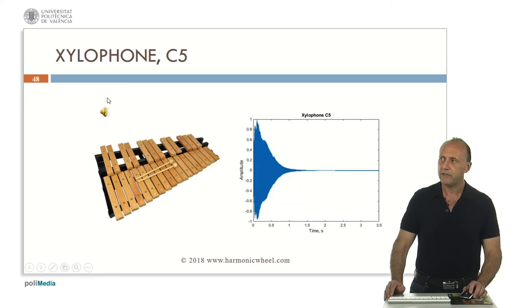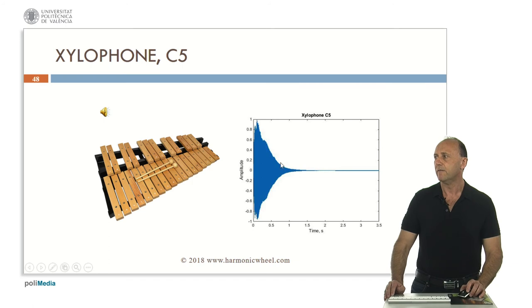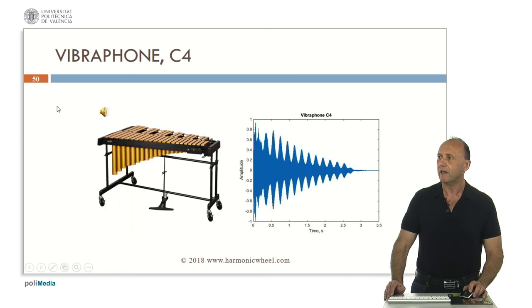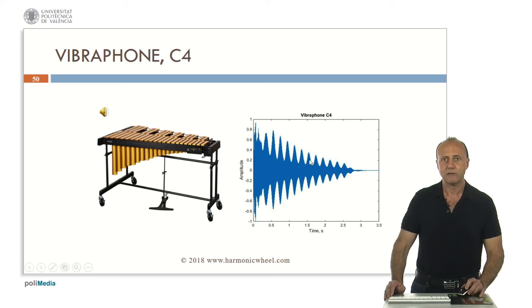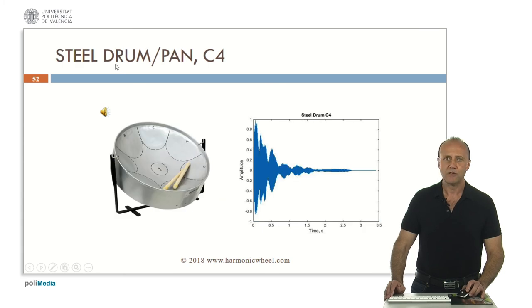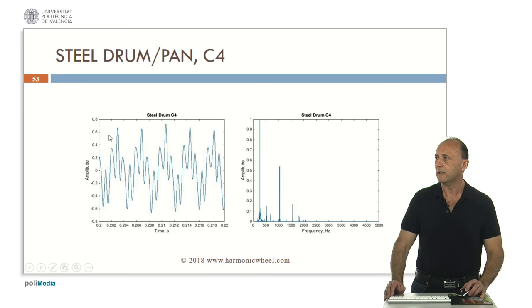Now, with definite pitch, we have the xylophone, C5. This is the envelope, the waveform, and the spectrum, which is very pure. Vibraphone, C4. We can appreciate the vibrato in amplitude as we can see on the envelope. This is the waveform and the spectrum. The steel drum or steel pan, C4. This is the envelope, the waveform, and the spectrum.